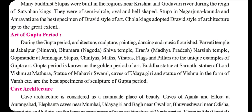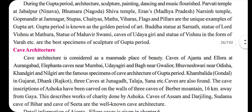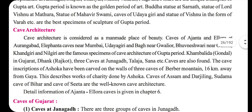Regarding the art of the Gupta period: during this time, architecture, sculpture, painting and dancing all flourished greatly. The Buddha statue at Sarnath and the statue of Lord Vishnu at Mathura are the best specimens of Gupta period sculpture. Cave architecture is also important from an examination standpoint; the caves of Ajanta and Ellora are notable specimens, and we will study them in detail in chapter 6.